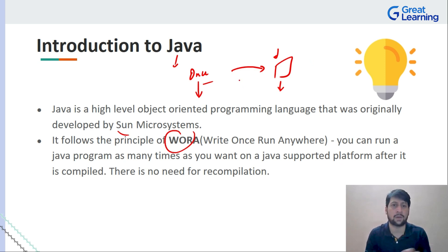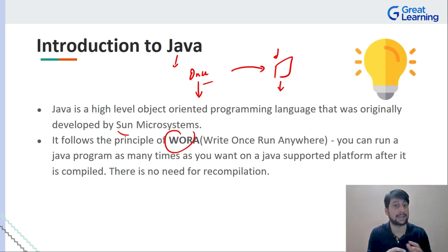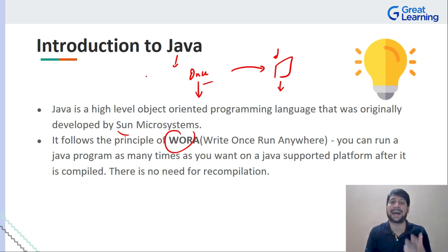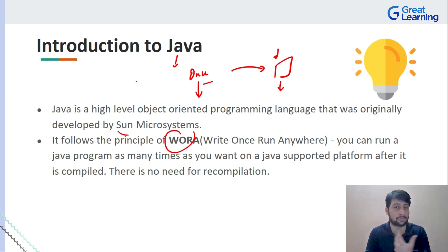This is just an introduction. We already have separate videos on Java where we talk about its features and all those things. That is not the objective here. Here, we are just introducing this topic: Java is a high-level object-oriented programming language, and it follows one principle, which is WORA.